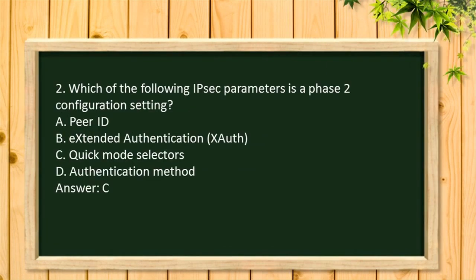Question 2. Which of the following IPSec parameters is a Phase 2 configuration setting? A. Peer ID. B. Extended Authentication XAuth. C. Quick Mode Selectors. D. Authentication Method. Answer: C.